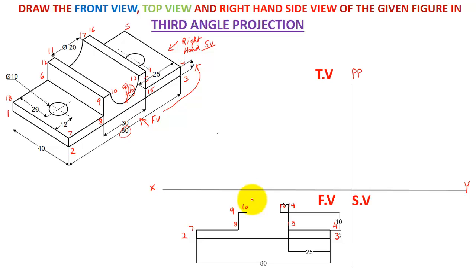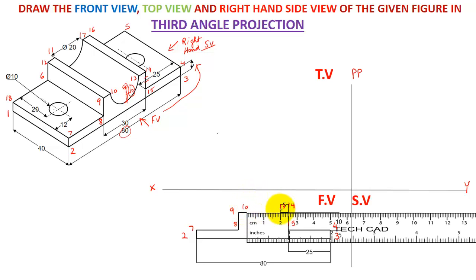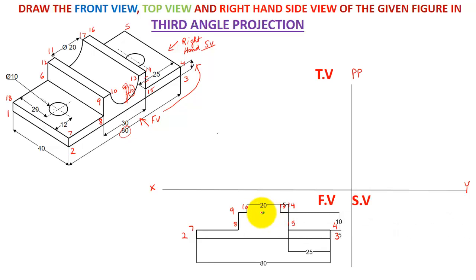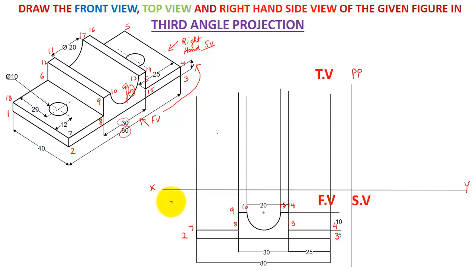Students, we already know that the 10-to-13 dimension is 20 mm as per the given figure. We can find the center, which is 10 mm from either point 10 or point 13. With the help of a compass, I make a semicircle of diameter 20 mm. The complete dimension from 9 to 14 is 30 mm as per the given figure, so I make a dimension of 30 mm here. Now taking projections towards the top view from the front view.